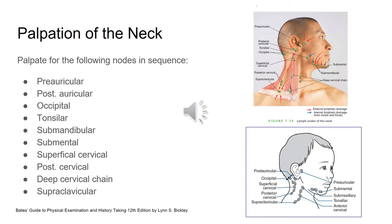This is the order in which nodes are palpated in older children and adolescents: pre-auricular, followed by posterior auricular, then occipital, then tonsillar, submandibular, submental, superficial cervical, posterior cervical, deep cervical chain, then supraclavicular.